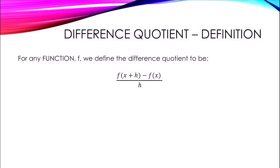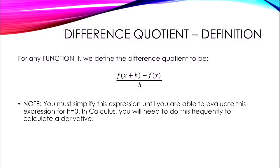You will need to simplify until you get an expression that can be evaluated at h equals zero without giving you division by zero. If we try to plug in h equals zero right away, this will produce an error because we cannot divide by zero. To clarify, in PreCalculus we don't actually plug in h equals zero, but in Calculus we will be doing just that. In order to understand why, we have to get a better visual understanding of what the difference quotient represents.